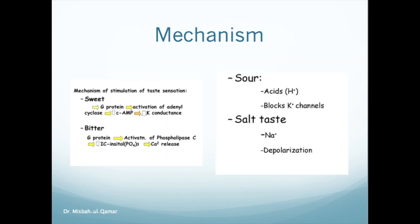Looking at the mechanism of receptor stimulation for different taste sensations: for sour taste, free hydrogen ions in acid block the potassium channel, resulting in a decrease in the passive movement of potassium out of the cell, and that's how a reduction in internal negativity occurs.